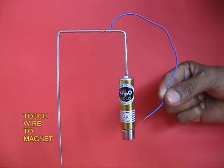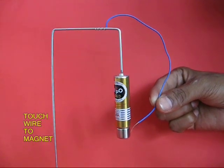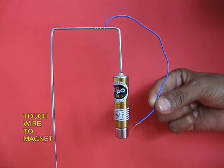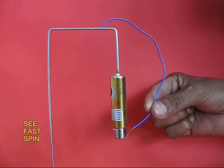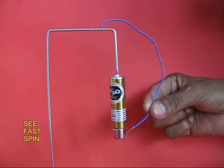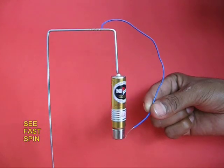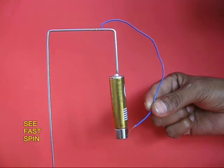If you touch the other end of the blue wire to the magnet, the circuit would be completed and the battery along with the magnet would start spinning like a motor. The whole assembly will spin very very fast.